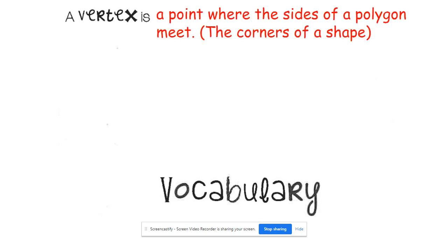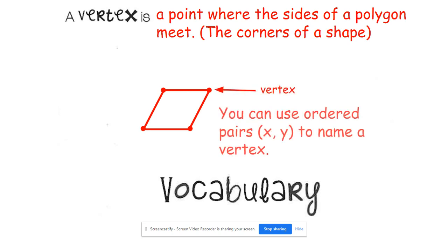First of all, let's start off with some vocab we need to know. If I ever go too fast on the vocab, just pause the video, continue copying it down and then unpause it and keep following along. A vertex is a point where the sides of a polygon meet or it makes up the corners of a specific shape.